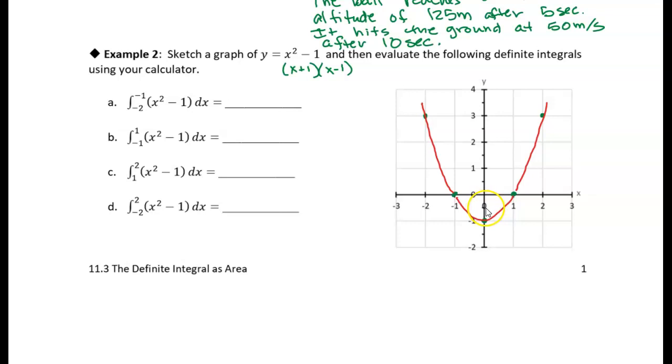Now we want to evaluate these integrals. The first integral is ∫(x² - 1)dx from -2 to 1. Let's sketch that area. What we're really finding is the area under this curve right here. That's part A.